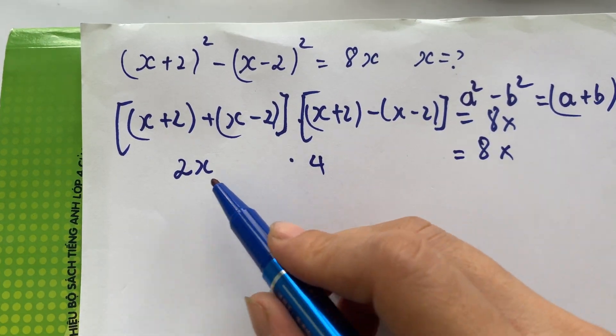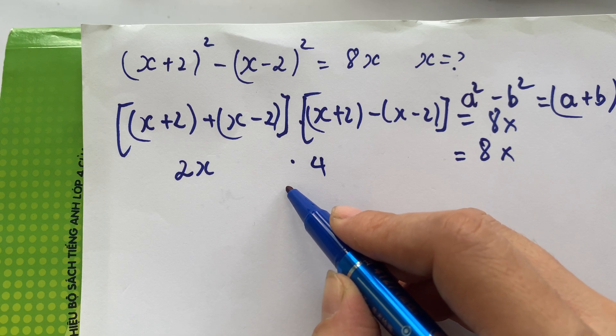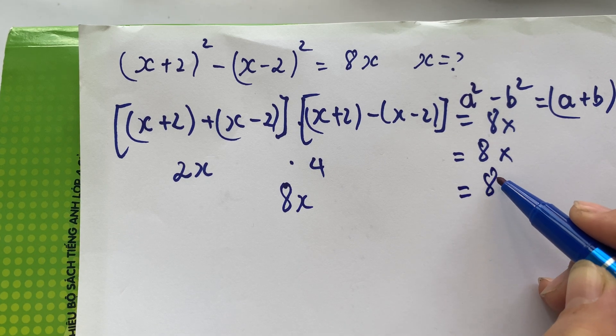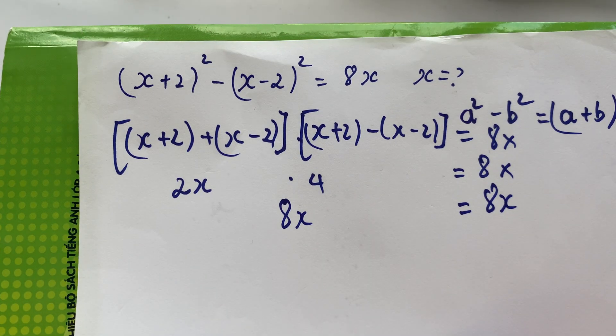You see, 2 times 4 equals 8x, which equals 8x. Like this.